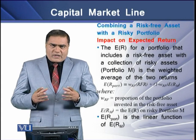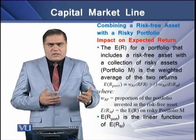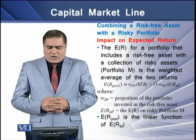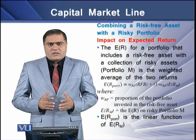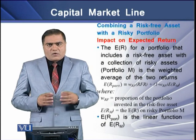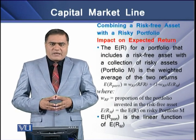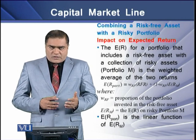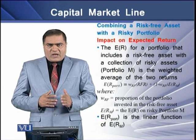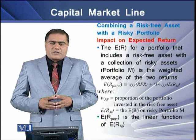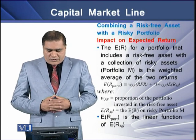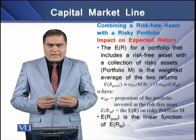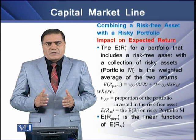Next, what happens if we combine a risk-free asset with a risky portfolio? There are two effects of this combination. The first effect is on the expected returns. The expected return of a portfolio that includes a risk-free asset with a collection of risky assets is the weighted average of the two return streams. The equation equals the weight of the risk-free asset times the risk-free rate, plus one minus that weight times the expected return on the market portfolio. This shows that the expected return on the portfolio has a linear relationship with the expected return on the market.